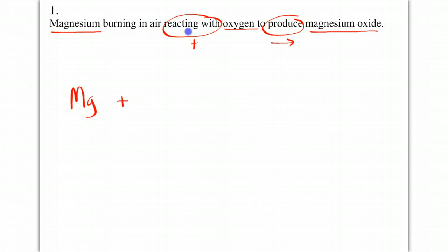Reacting with means plus. Oxygen on the other hand is one of my seven diatomics so I need to put a two next to it. And then to produce magnesium oxide. And this is ionic so I need to balance my charges. Magnesium is plus two, oxide is minus two, they cancel. And this is my final answer for my translation.